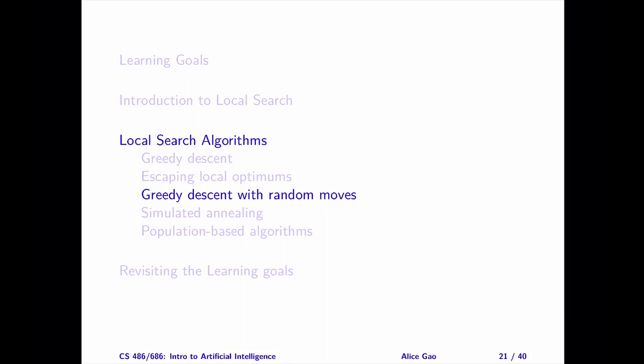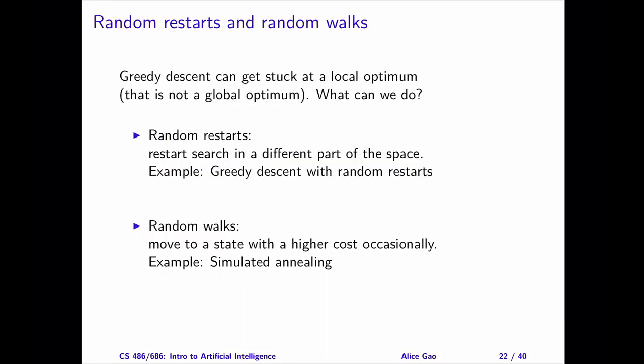In this video, let's look at how we can escape strict local optimals using random moves. There are two types of random moves: random restarts and random walks. A random restart is a potentially big jump in the search space. If the algorithm is stuck in a particular region, we will generate and move to a random state in the space. Adding random restarts will improve the property of greedy descent significantly.